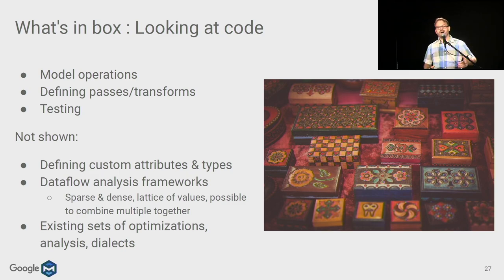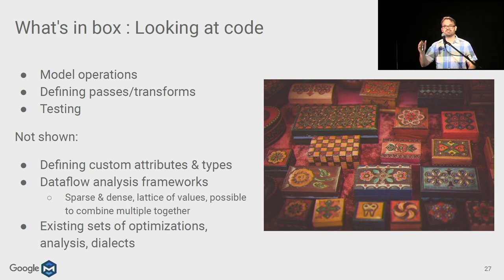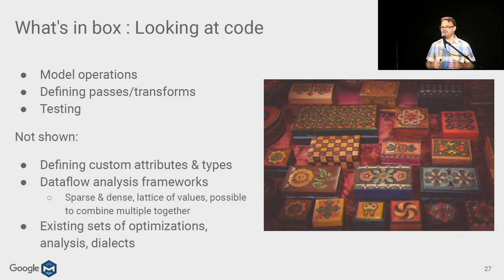What's in the box? MLIR has many components. The tutorial will cover several, including how to define and model operations, define passes, transformations and patterns, as well as testing. There are also custom attributes and types, a data flow analysis framework supporting sparse and dense analysis, and a large set of existing optimizations, analyses, and dialects — such as the affine dialect with its simplified polyhedral form, SCF (structured control flow), and Linalg, an interesting iteration domain modeling format.